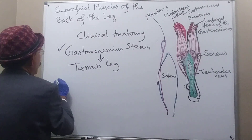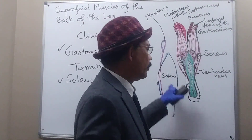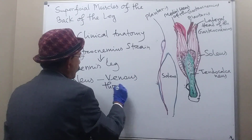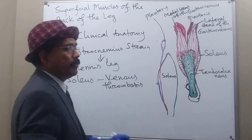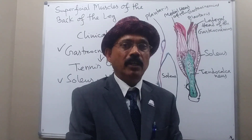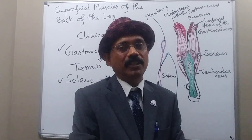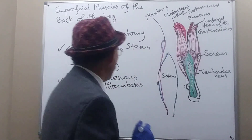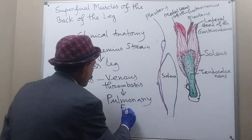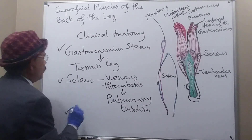The soleus muscle, like other calf muscles, may be a site of venous thrombosis. The thrombus may be released and travel through the venous channel — popliteal vein, femoral vein, external iliac vein, common iliac vein, inferior vena cava, right atrium, right ventricle, pulmonary trunk, pulmonary artery — and block the pulmonary artery, leading to pulmonary embolism.